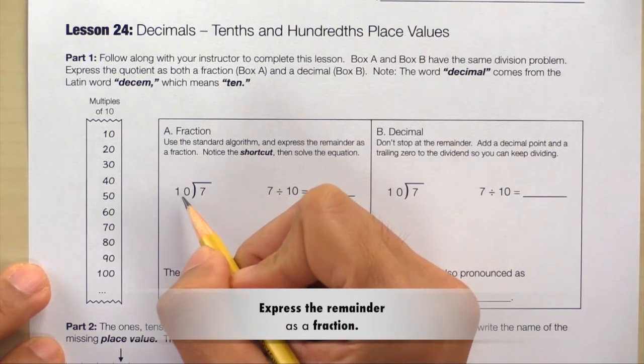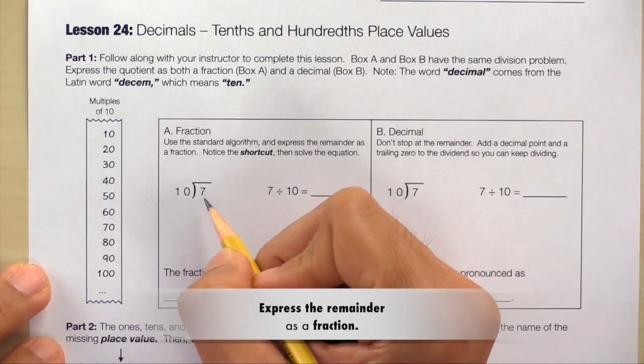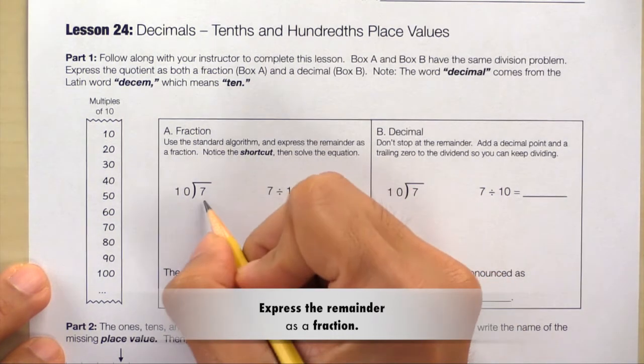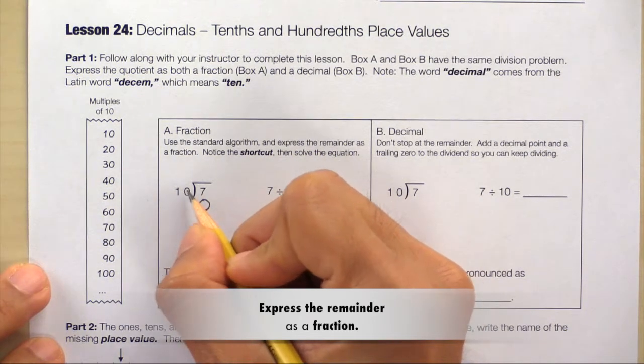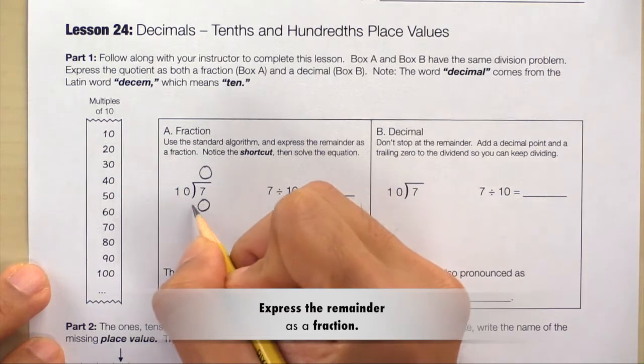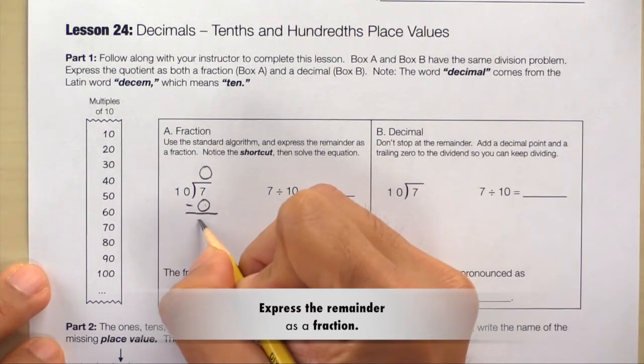Can we do 7 divided by 10 evenly? The answer is no so we need to count backwards. We can't do 6 divided by 10 or 5, 4, 3, 2, or 1 but we can do 0 divided by 10. If 0 divided by 10 equals 0 then 0 times 10 is 0. Subtract. 7 minus 0 is 7.